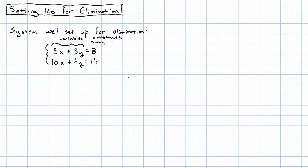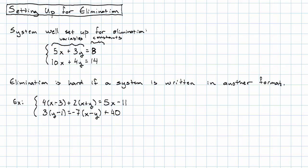If your system is not written like this, elimination gets unpleasant. For example, if we have a system that looks like this: 4(x-3) + 2(x+y) = 5x - 11, and 3(y-1) = -7(x-y) + 40. If we have a system that looks like this, elimination is going to be pretty much impossible.